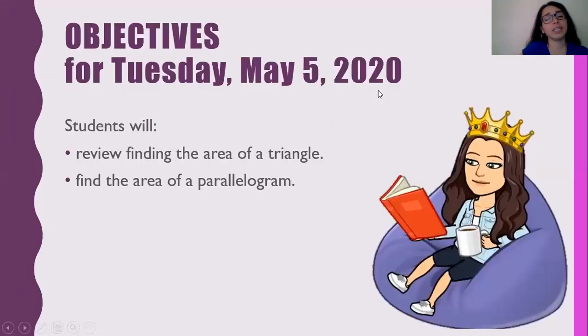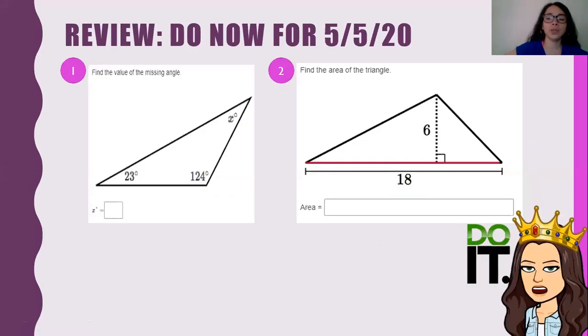So let's look at our objectives for today. The point will be to review how to find the area of a triangle and then we're going to find a parallelogram. So for our do now, let's find the missing angles. So if we look at question one, hopefully you guys remembered that activity where I had you guys cut the triangle, you tear it up into three pieces. When you tear them up into three pieces, when you put them together, they all make 180 degrees.